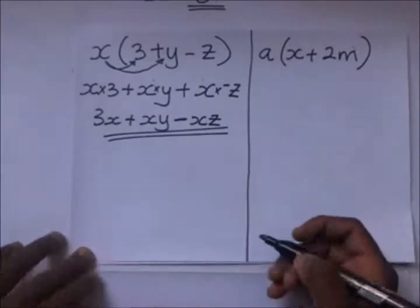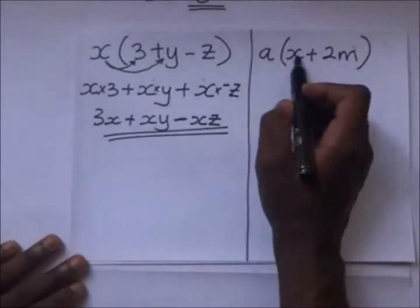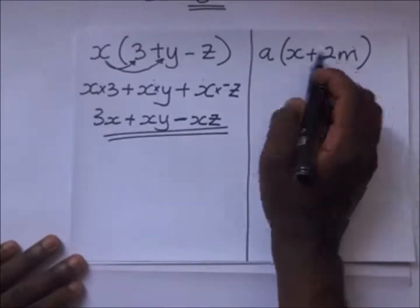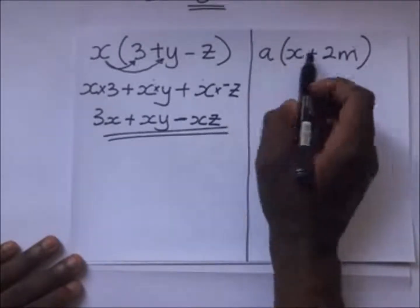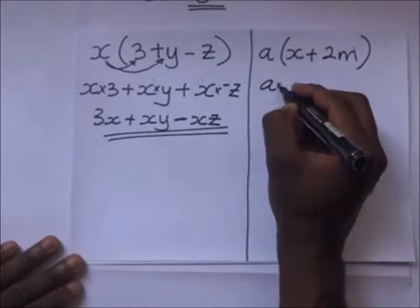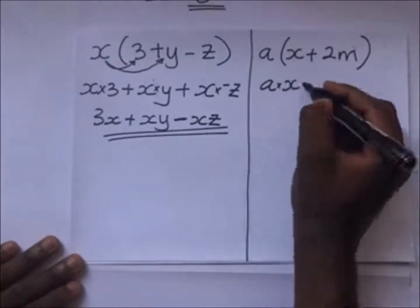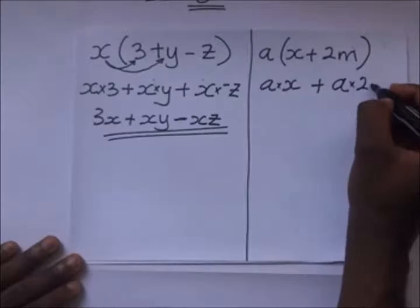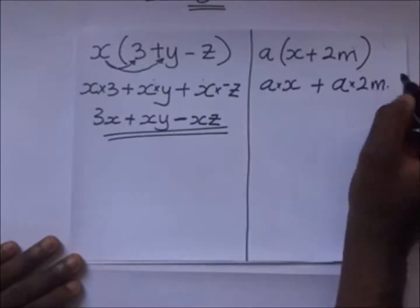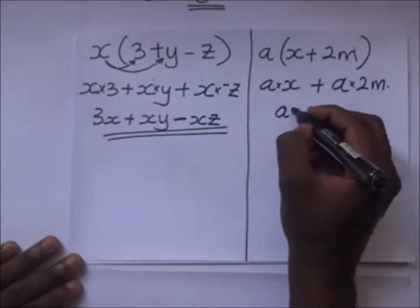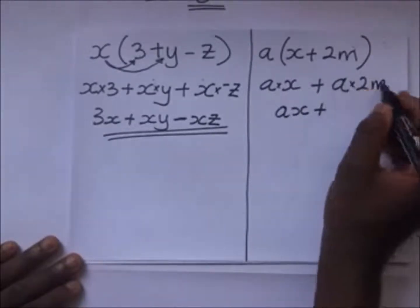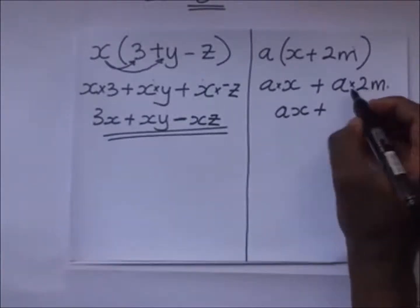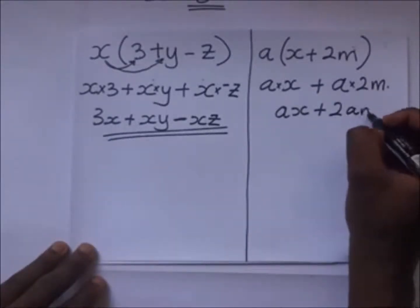Let's open this bracket: a(x + 2m). Opening brackets gives a times x plus a times 2m, which is ax plus 2am. You can write it as 2am or a·2m — the order doesn't matter. That's the answer.